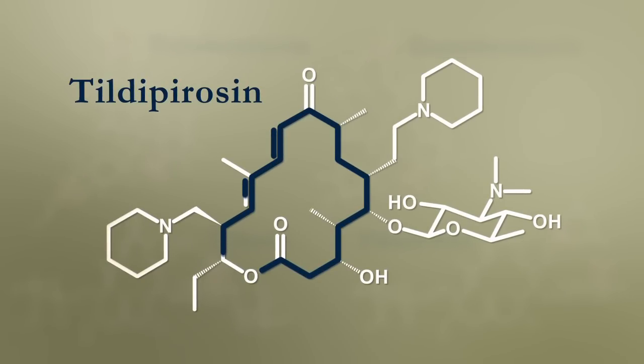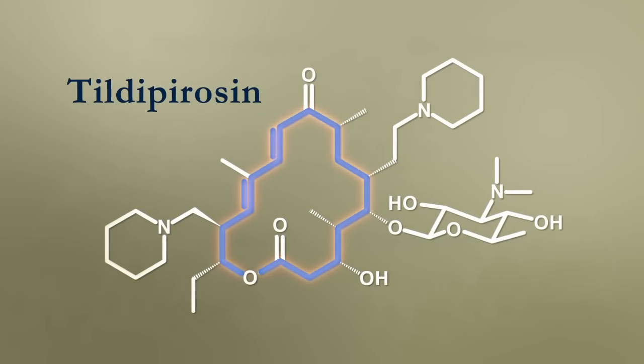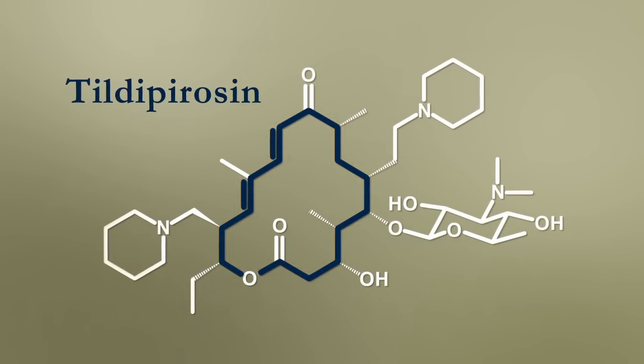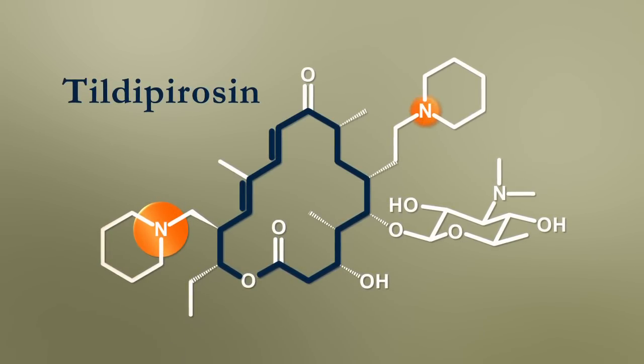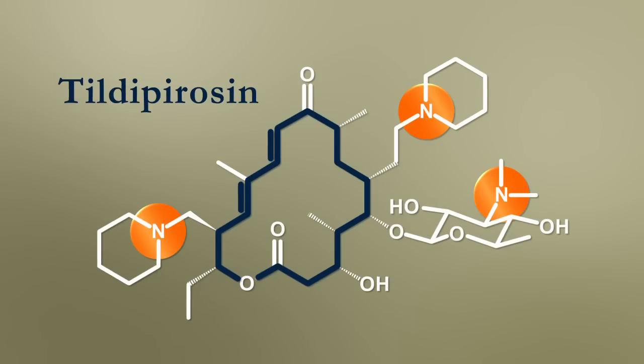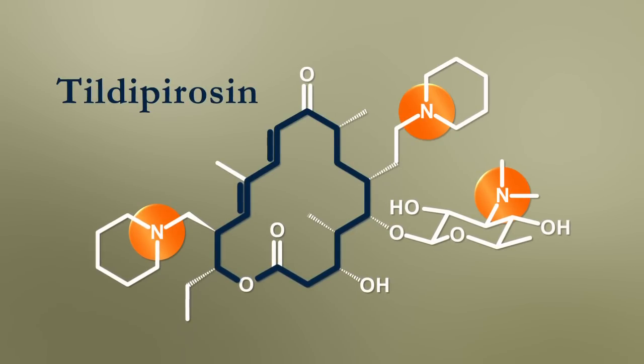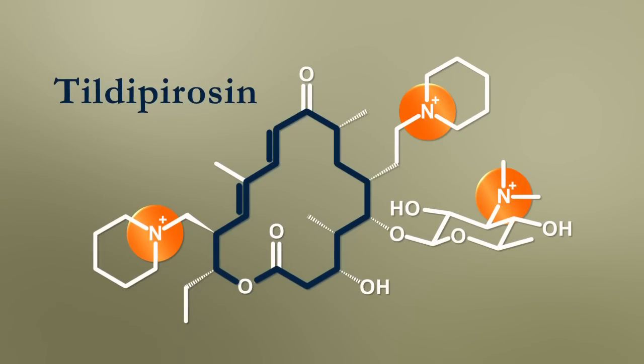Due to the unique chemical structure of Tildipirosin, the use of this semi-synthetic 16-membered macrolide has substantial advantages. The presence of three nitrogen amine groups attached to the lactone ring gives the molecule a tri-basic character. Any or all of these groups can become positively charged, depending on the pH value of the environment and on interactions with nearby membranes or proteins.